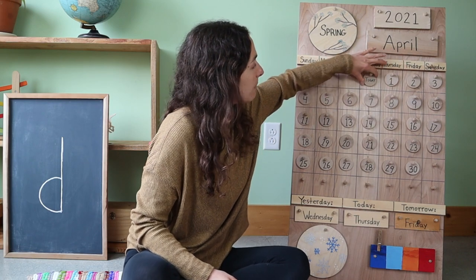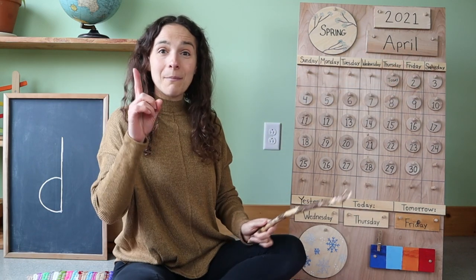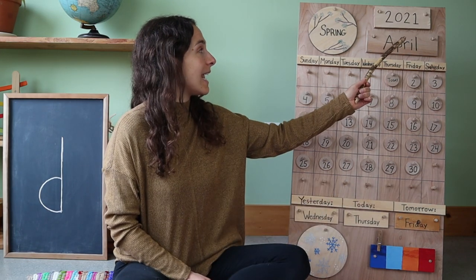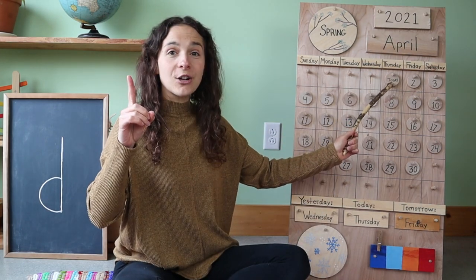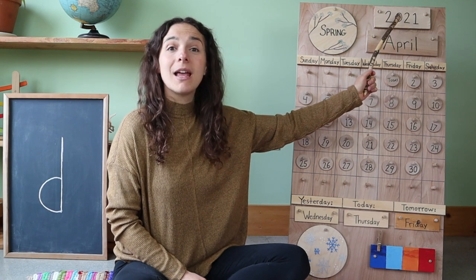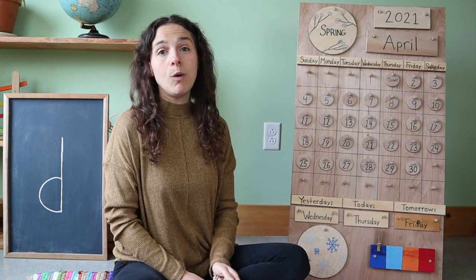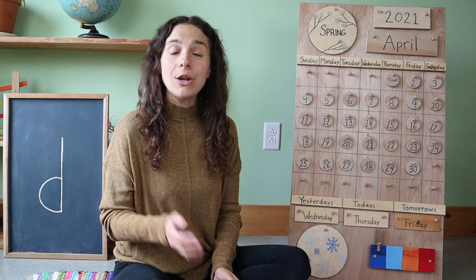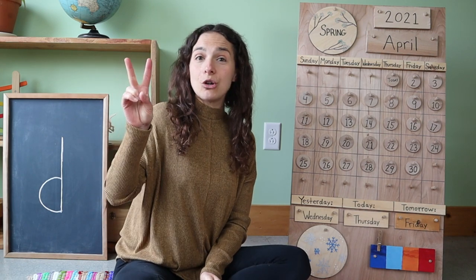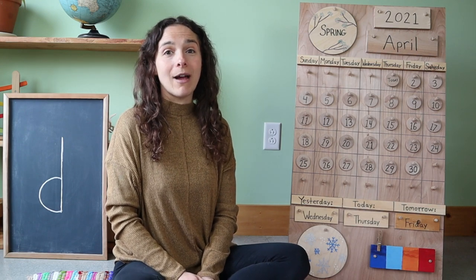Let's move the chip over to the number 1 because today is April 1st. And right up here we have the year. The year is 2021 — or you can also say twenty-twenty-one. There are two ways to say the year, and both of them are correct.